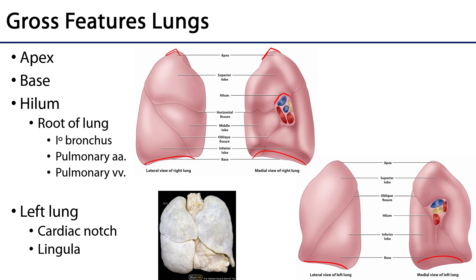The hilum of an organ is where the neurovasculature may enter and leave. The hilum has many different contents, which are known as the root of the lung. The major contents include the primary bronchi, the pulmonary arteries, and the pulmonary veins.